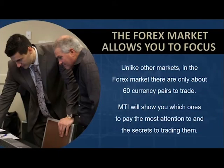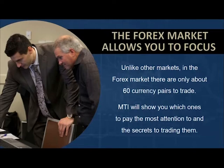One other quick benefit about the Forex market: there are probably a lot of stock traders here who already know there are thousands of stocks you can watch and trade. However, in the Forex market there are only about 60 different currency pairs to trade. Because we have 23 years of experience in this market, we're going to narrow this down and teach you which ones to pay the most attention to. I actually follow about 18 different currency pairs regularly, and the strategy I'm going to show you will focus on just six currency pairs.